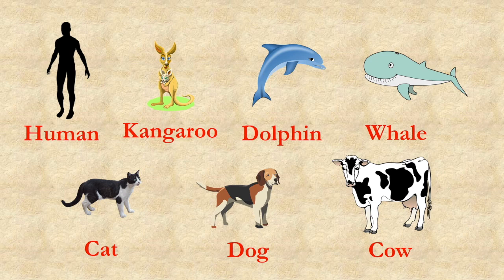Human, kangaroo, dolphin, whale, cat, dog, and cow are all examples of mammals. I am quite sure you will find plenty of such mammals in your surroundings. So kids, can you find out more mammals and differentiate them as placental, marsupials, and monotreme?